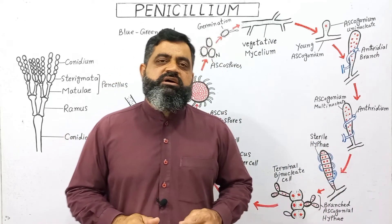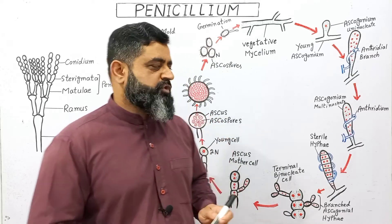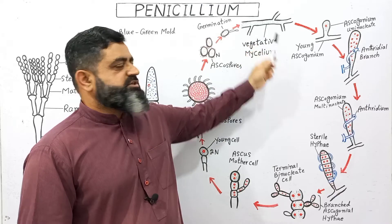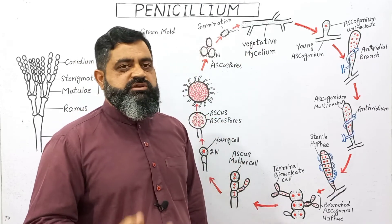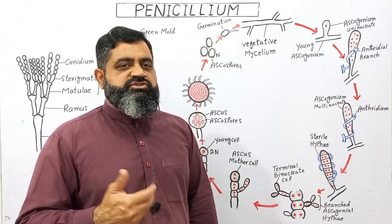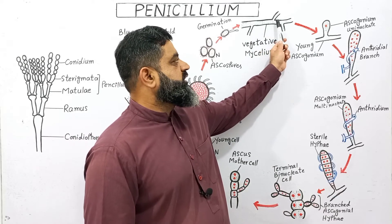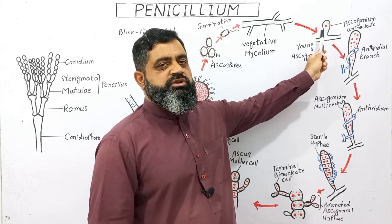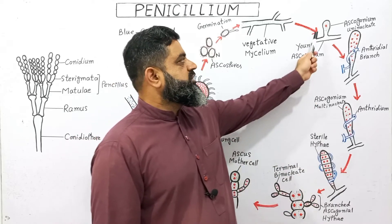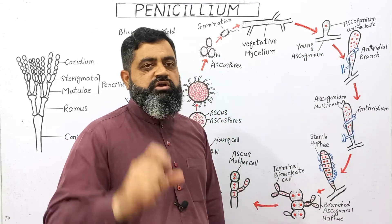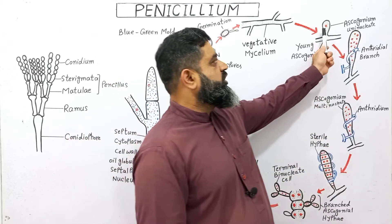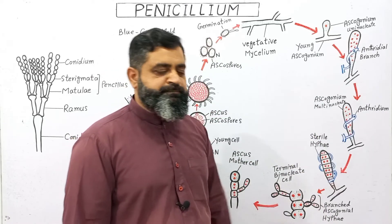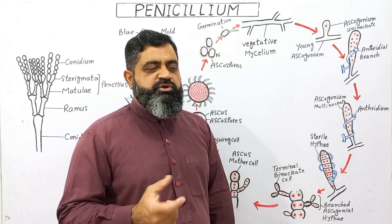Now let's discuss the sexual reproduction or life cycle of Penicillium. Starting from the vegetative mycelium, which grows rapidly on any surface — when unfavorable conditions are reached, it starts to reproduce sexually. It produces an outgrowth known as ascogonium. Some cytoplasm and one nucleus are transferred into this ascogonium. The ascogonium is the female reproductive organ of the fungus. When it contains one nucleus, it is called uninucleate. At this young stage, it contains a haploid nucleus.